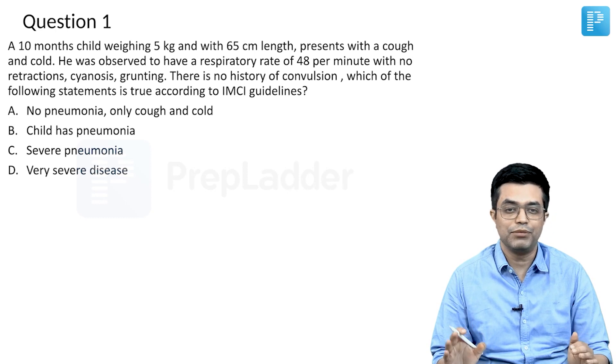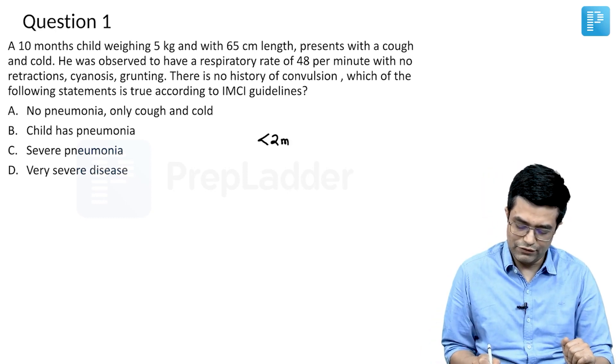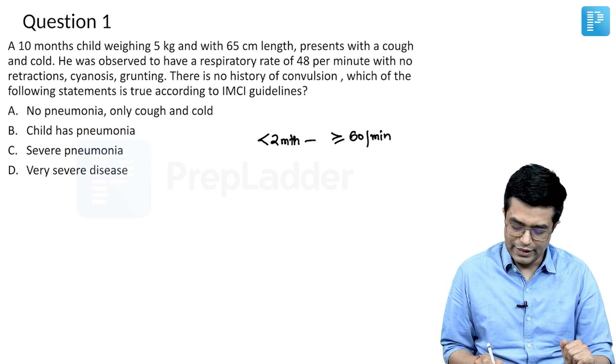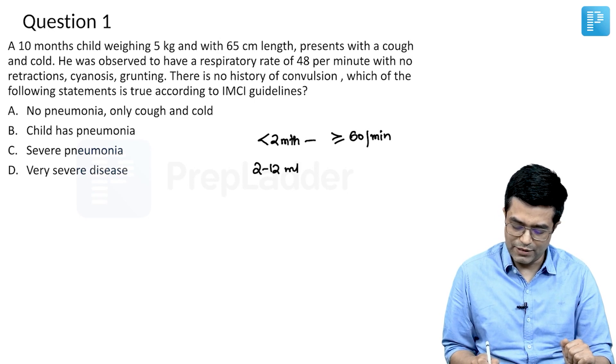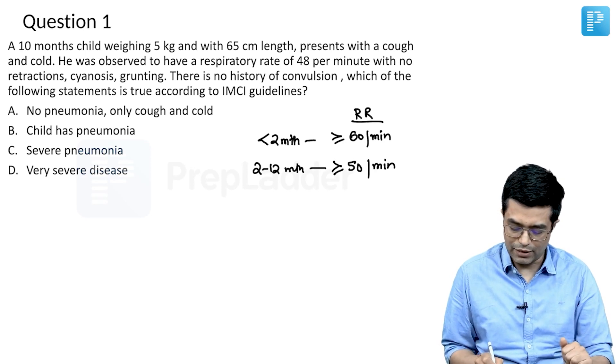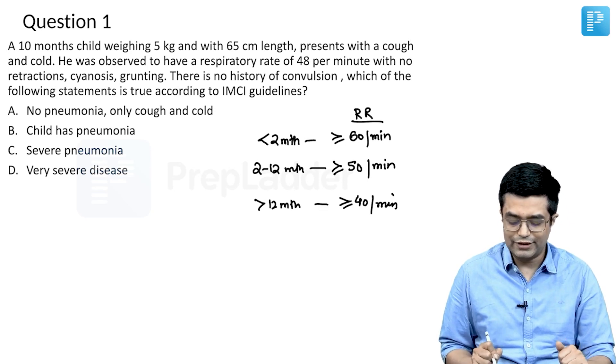The diagnosis of pneumonia will rest upon whether there is age-appropriate tachypnea or not. For less than two month child, if the respiratory rate is equal to or more than 60 per minute we say the child is having tachypnea. If two to twelve month child, the respiratory rate is equal to or more than 50 per minute then there is tachypnea. And above twelve months till five years of age, if the respiratory rate is equal to or more than 40 per minute, then the child is having tachypnea.